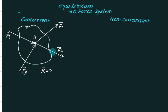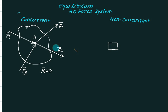If R bar itself is equal to zero, then the net force acting on the system along x, y, z is zero. If no force is acting on the system, the body will be in a static condition - it will never translate. To move this body or change its position, we require some external force. So R bar equal to zero means the sum of all forces must equal zero. The only necessary condition for equilibrium for a concurrent system is sigma F bar equal to zero.